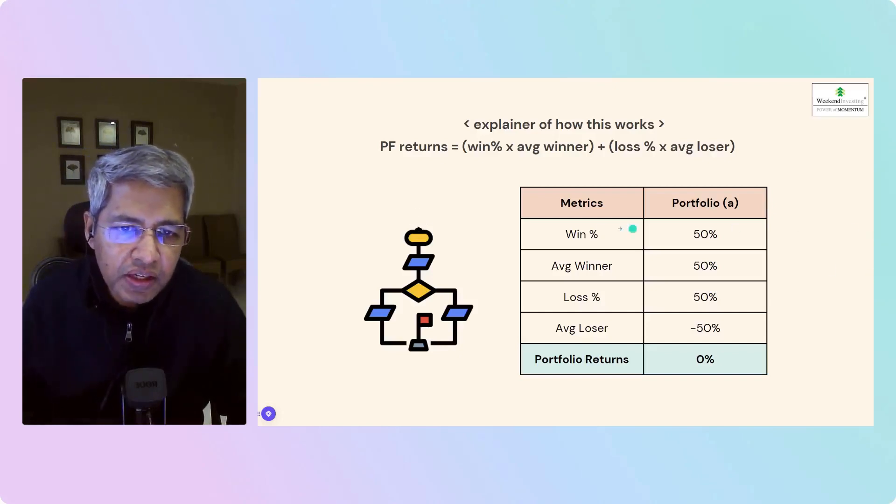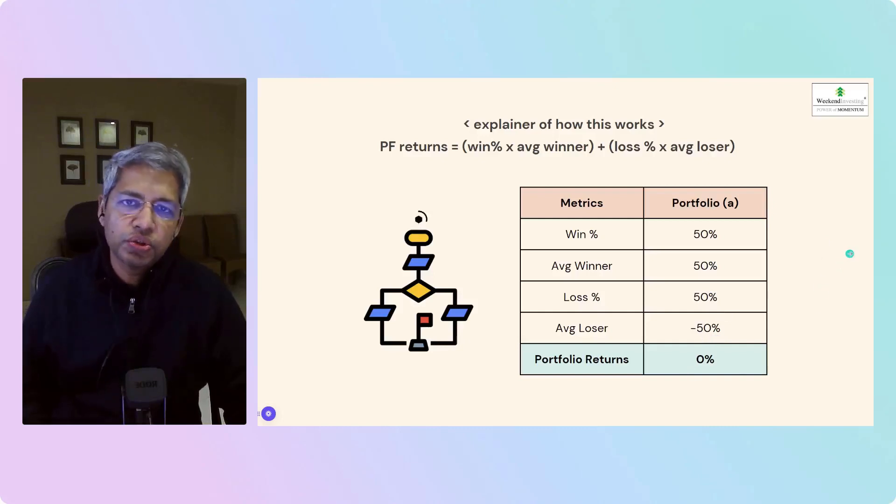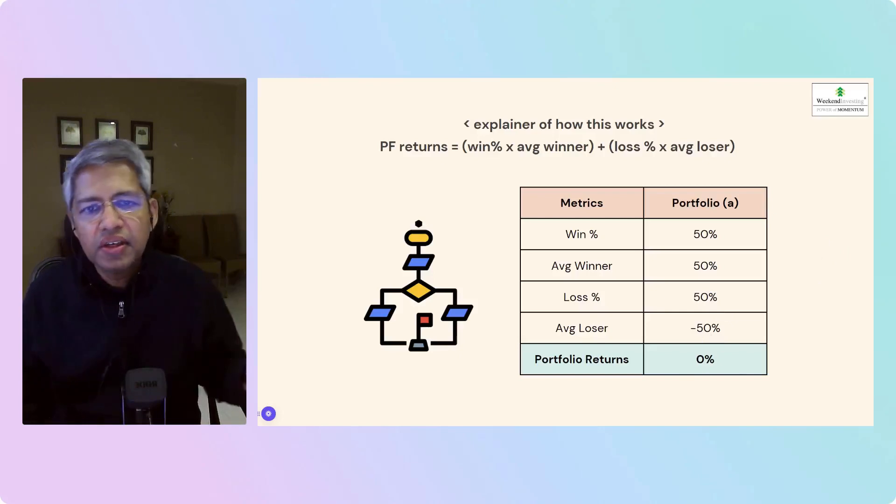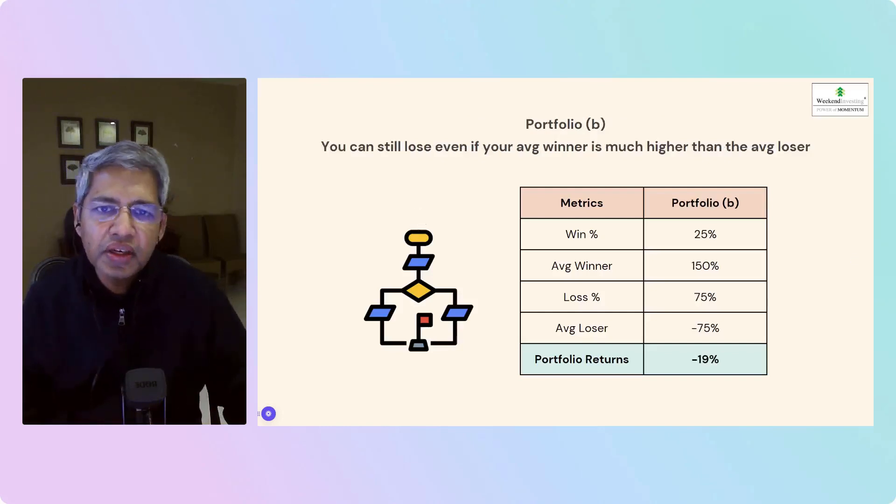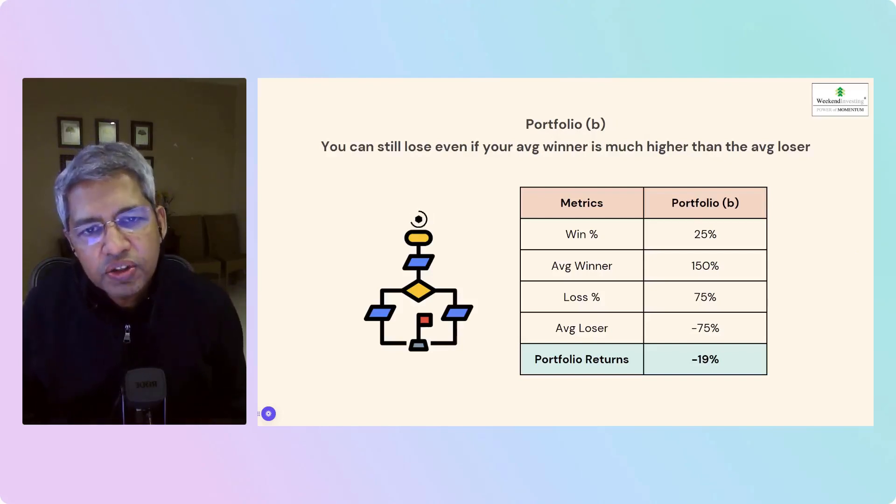So this metrics, if you see on the screen, Portfolio A: 50% winning trades, 50% losing trades, average winner wins you 50%, average loser loses you 50%, net result is zero. So you did 10 transactions, 50% went right, 50% went wrong. In 50% you made 50% each, in the other 50% you lost 50% each. Portfolio return is zero. We definitely don't want this.